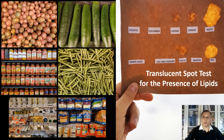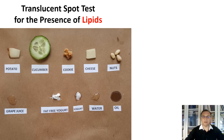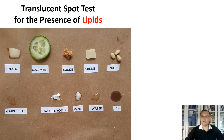During this video, you will learn how to quickly identify the presence of oils or fats in various foods. Let's run tests on potatoes, cucumbers, cookies, cheese, pine nuts, and other foods for the presence of oils and fats.